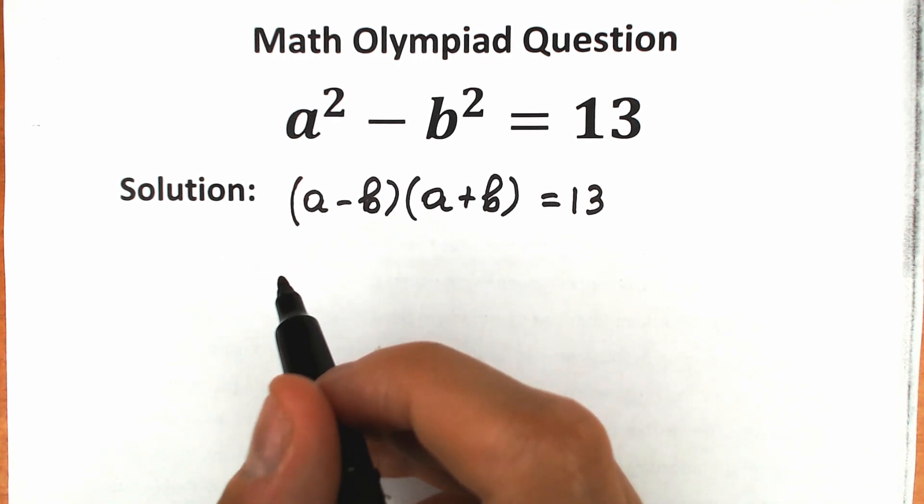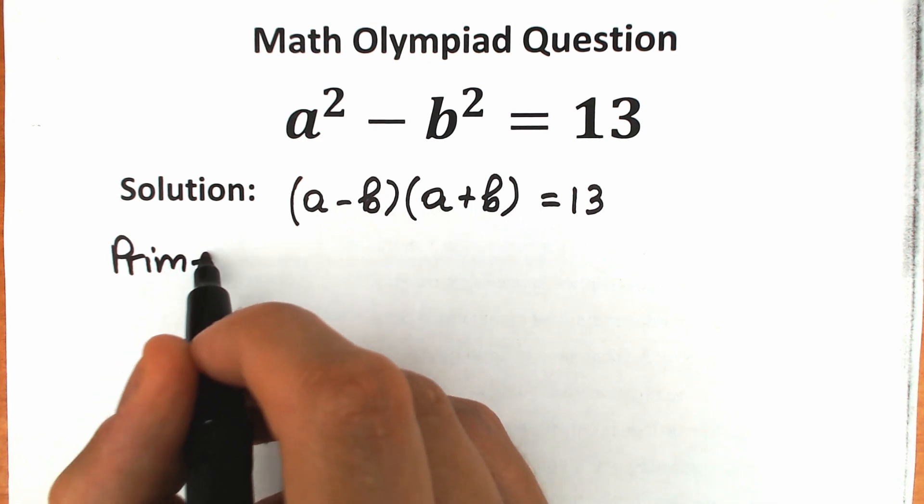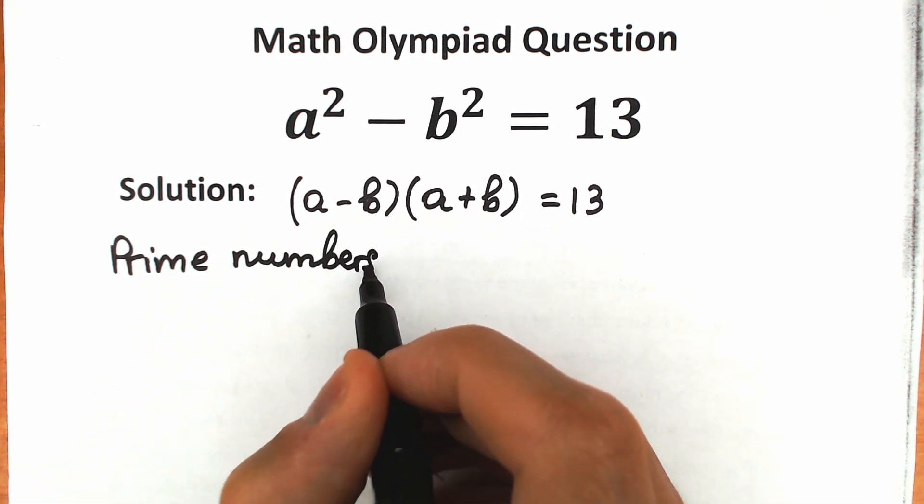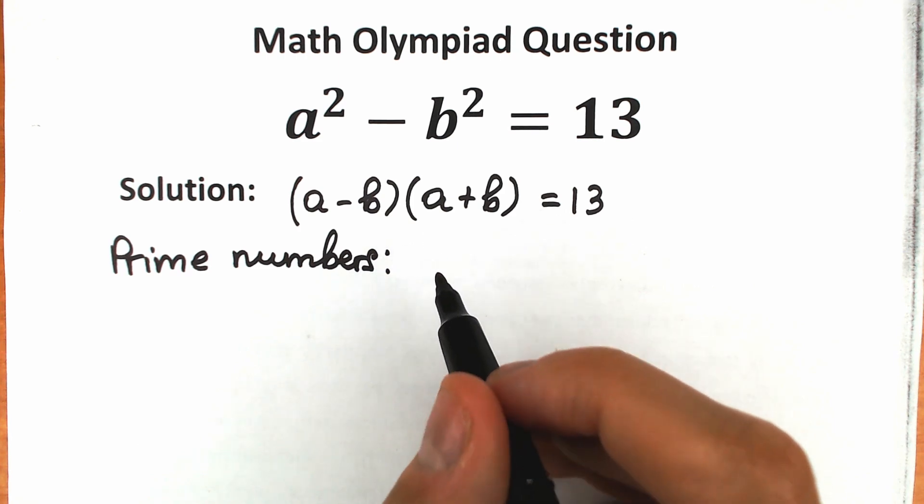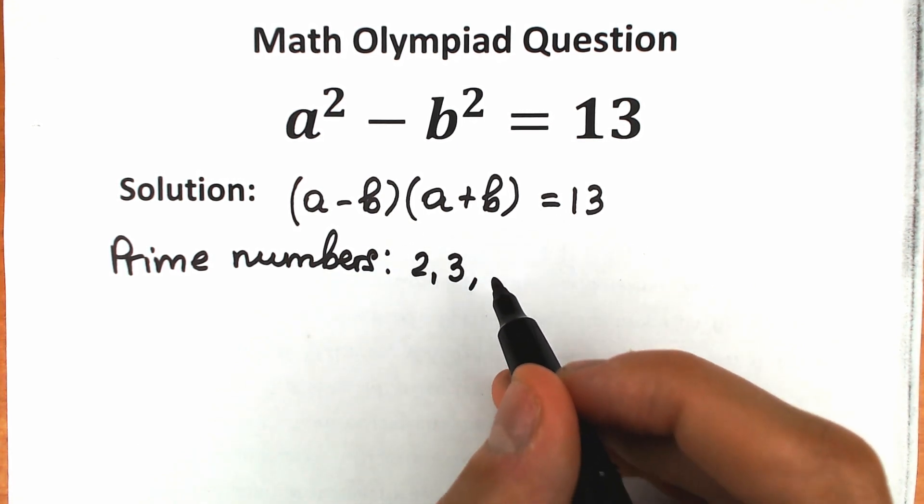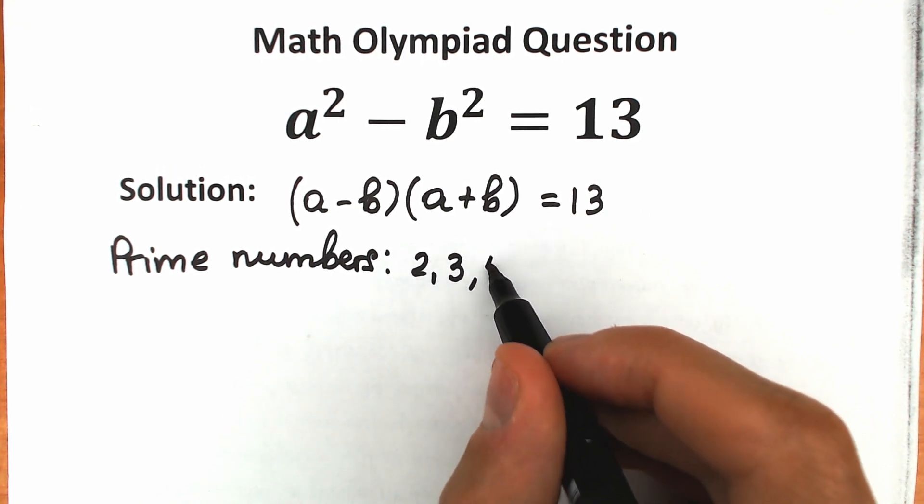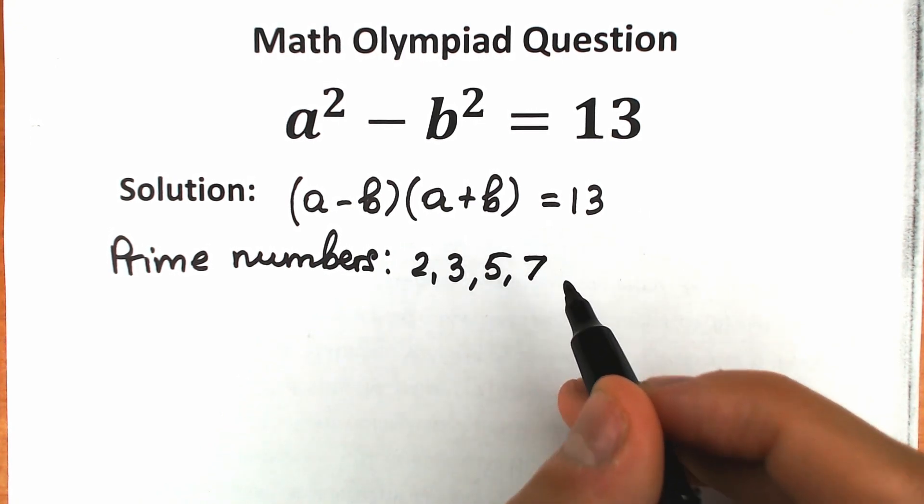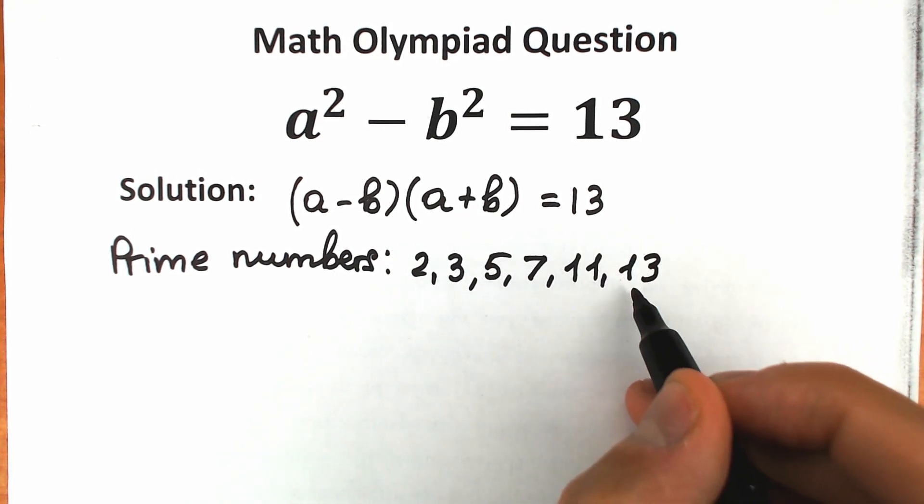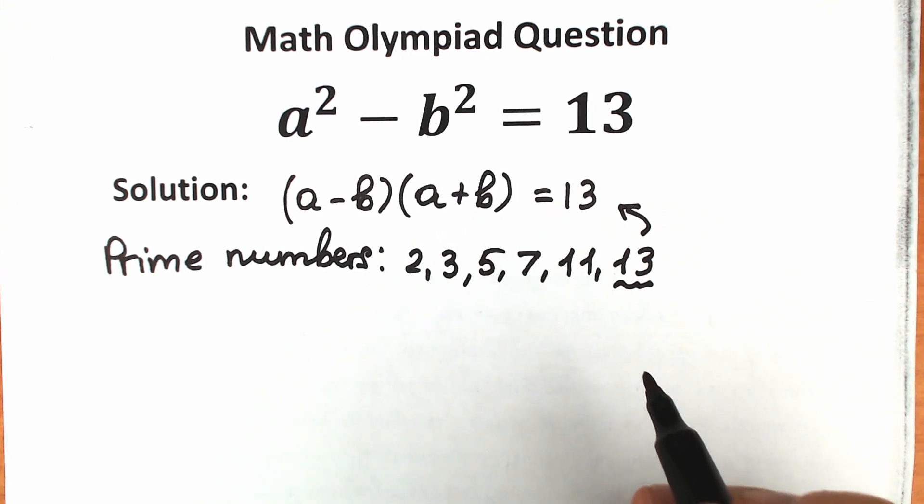So what are the prime numbers from 1 to 100? Let's start from the beginning. The first prime number is 2, then we have 3, because we can divide it only by 1 and itself. The next one looks like 4, but 4 is not a prime number. The next one is 5, then 7, then 11, and the next one is 13. And if you look closely, we have 13 in our question. So 13 is a prime number.